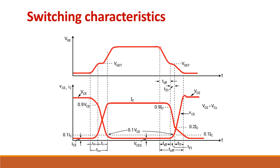During turn-off, when the gate pulse is removed, the voltage starts to discharge slowly. Until it reaches the threshold value, the current decreases slowly from 100% to 90% — this is the off-state delay period. During fall time TF1, current falls from 90% to 20%, and during fall time TF2 it falls from 20% to 10%, while the voltage starts to build up. So the off time has three time intervals.